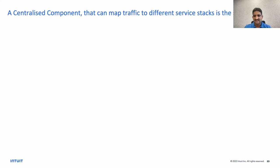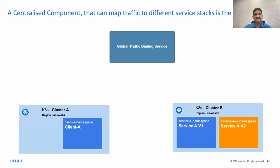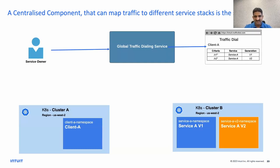How can we provide a user-friendly solution? At Intuit, we have different clusters with clients and services, and we have a global central component called the traffic dialing service. The traffic dialing service is aware of where clients are running in which cluster, where services are running and their clusters and regions, and the dependency graph between clients and services. With this centralized traffic dialing service having the entire mapping of communication between clients and services, a service owner can simply open a UI and decide how to dial traffic from different clients to different service stacks.